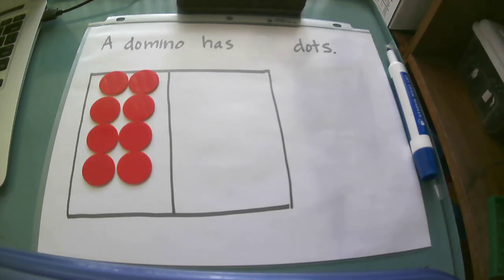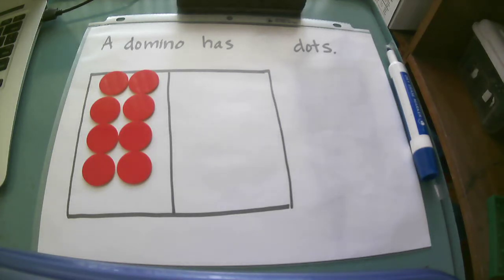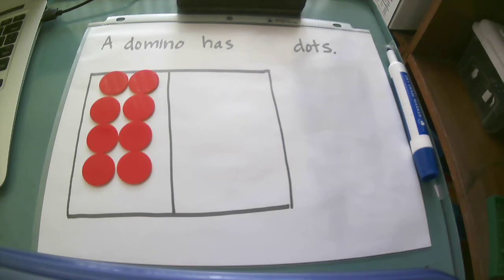Today for our math strategies video we're going to be talking about number partners for eight and number partners for nine, and this is from Ready Math lesson eight. Today's video we will be identifying number partners for eight and nine by using visual models with manipulatives and our number sentences.